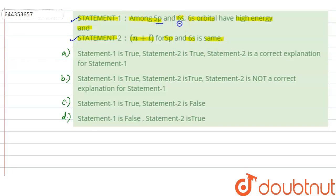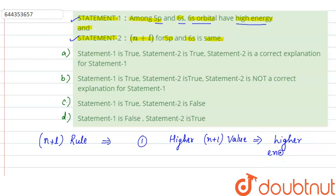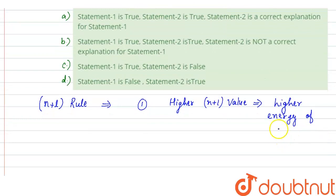In statement 1, it is given 5p and 6s. Among 5p and 6s, 6s orbital has high energy. So basically for finding the energy, we use the n plus l rule. According to the n plus l rule, a higher n plus l value means the orbital has higher energy.